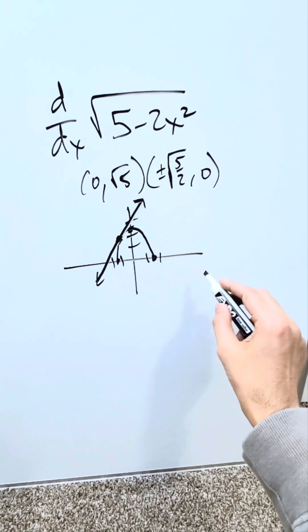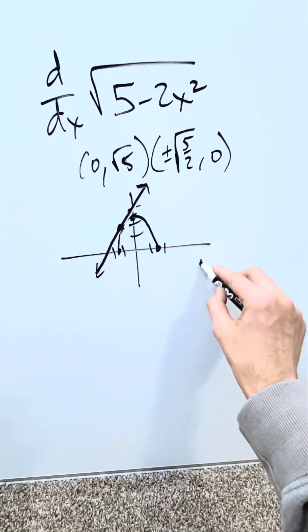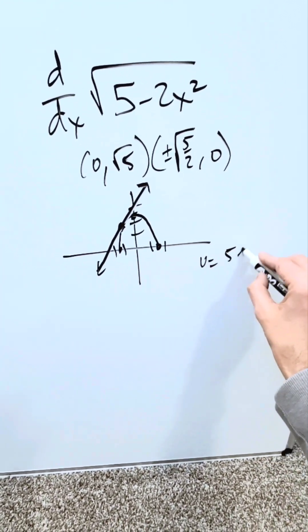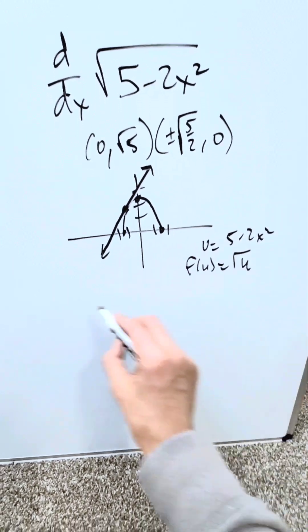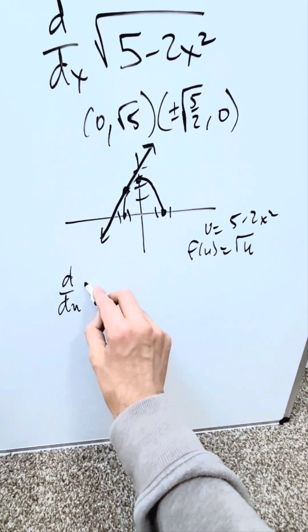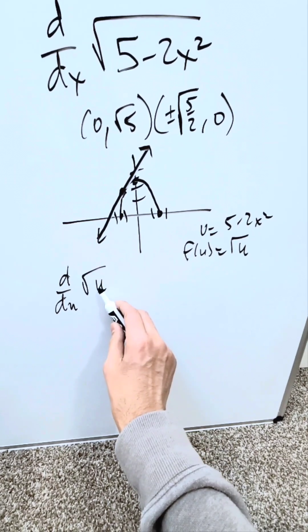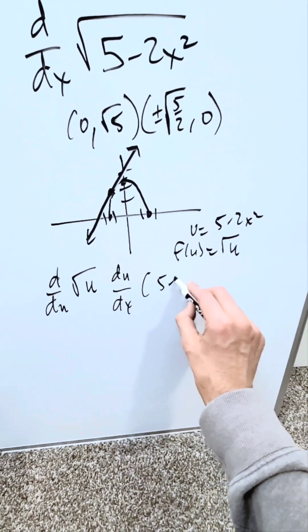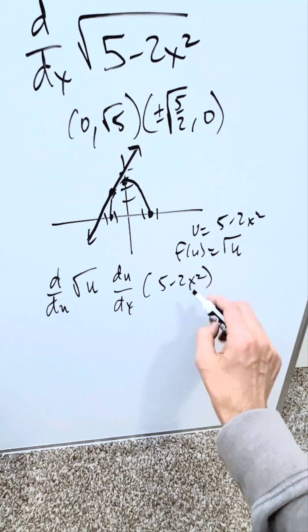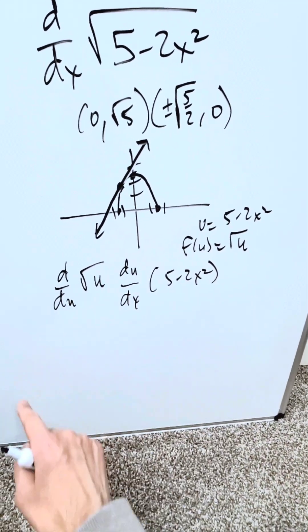You have a polynomial and a square root. Think about the chain rule. If u equals 5 minus 2x squared, I have a function with respect to u, which is root u. For the derivative with respect to u, I'll do the derivative of root u. Then I'll do the derivative with respect to x, which is 5 minus 2x squared. I haven't done the derivative yet, but I've laid out the foundation for the chain rule.